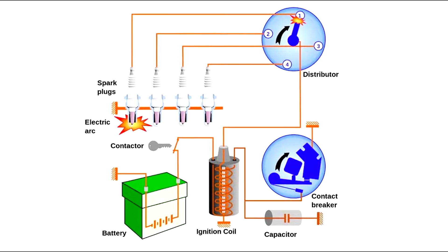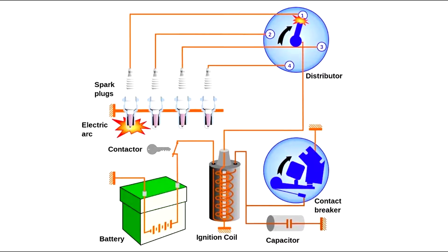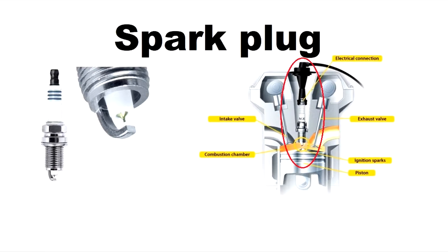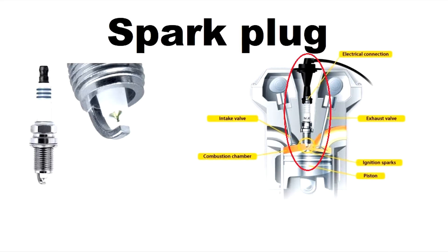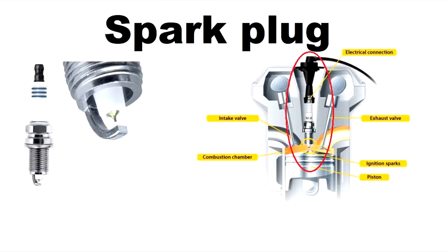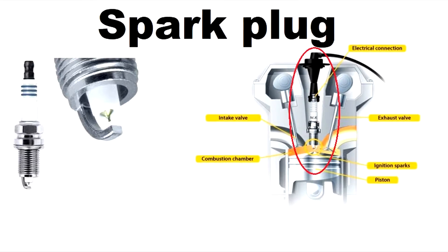A coil pack delivers electrical current to the spark plugs as directed by the ECM or engine control module. The ECM is a computer that directs major core engine functions like spark timing, valve open and close timing, air to fuel ratio, etc.